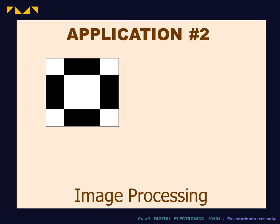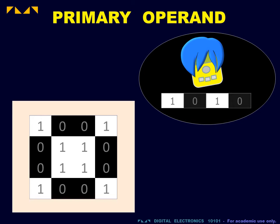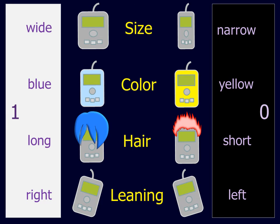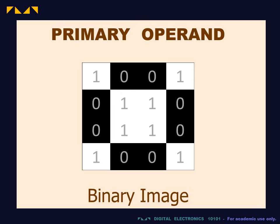The second application is image processing. We will use logic operators to perform basic functions on binary images. For each application, the pre-processed data will be called the primary operand. For the database application, the value of each attribute will be assigned as either 1 or 0. The primary operand will therefore be a series of 4 bits representing the profile of each client. For the image processing application, the primary operand consists of a 4 by 4 bit binary image. Each bit represents the pixel color: 1 for white, 0 for black.